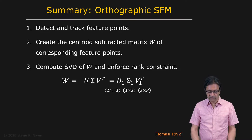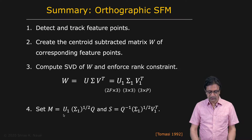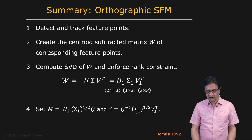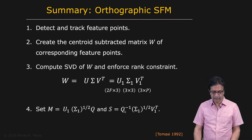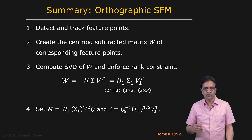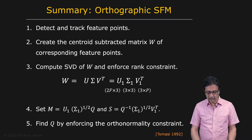We then split sigma1 into two equal pieces and insert Q, defining M as U1 times the square root of sigma1 times Q, and S as Q-inverse times the square root of sigma1 times V1 transpose. The only unknowns are the elements of Q. We solve for Q using the orthonormality constraints, and once Q is found, we plug it back in to obtain M and S.